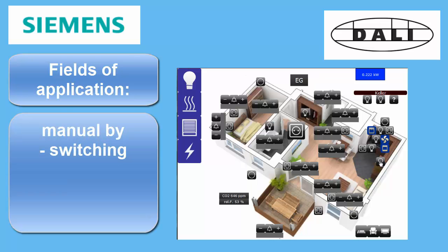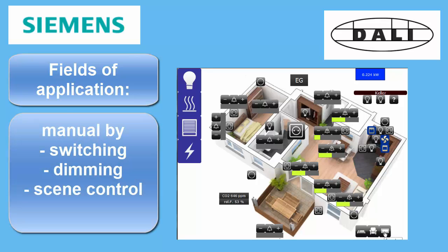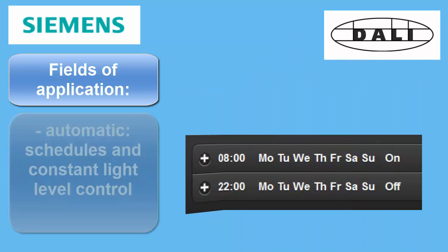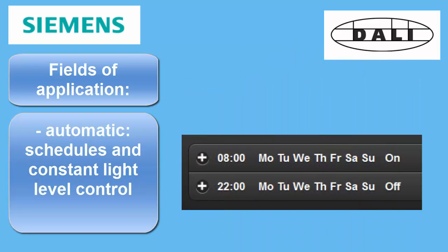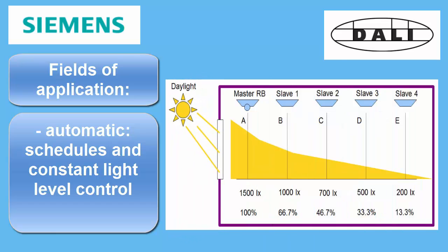The fields of application are naturally all that you can do with lighting: manual control by switching and dimming, comfort functions by scene control, automatic functions by schedules and closed-loop control — that is, constant light level control.